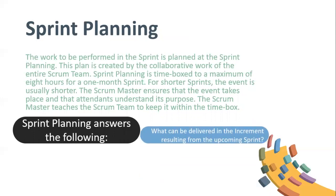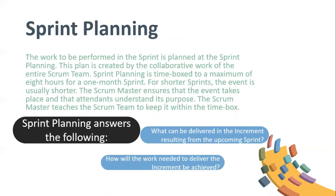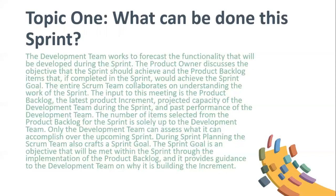What can be delivered in the increment resulting from the upcoming sprint? How will the work needed to deliver the increment be achieved? Topic one: what can be done this sprint? The development team works to forecast the functionality that will be developed during the sprint. The product owner discusses the objective that the sprint should achieve and the product backlog items that, if completed in the sprint, would achieve the sprint goal. The entire Scrum team collaborates on understanding the work of the sprint.